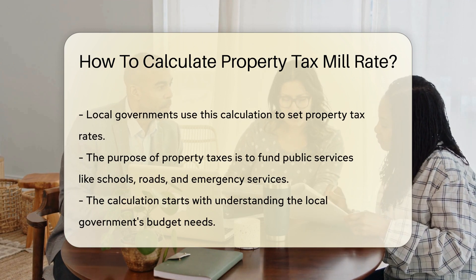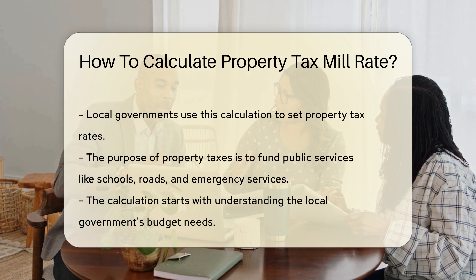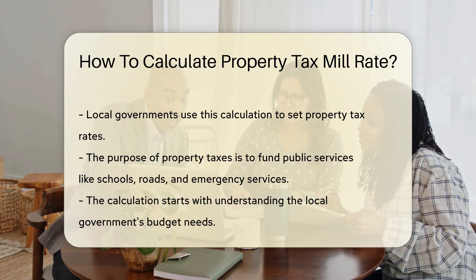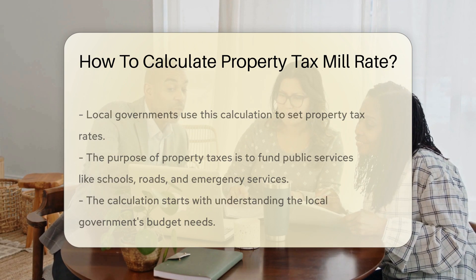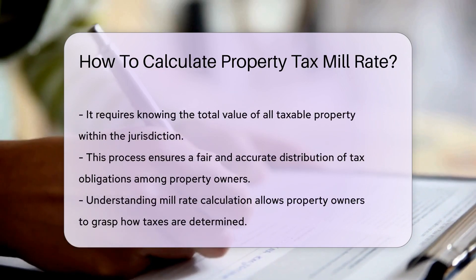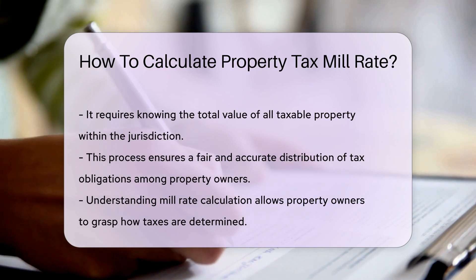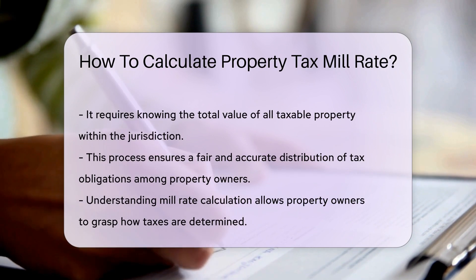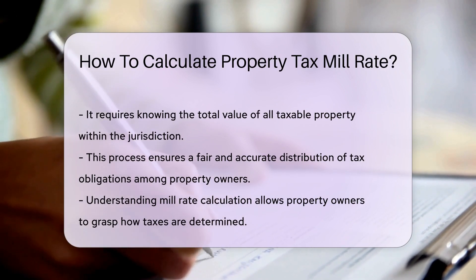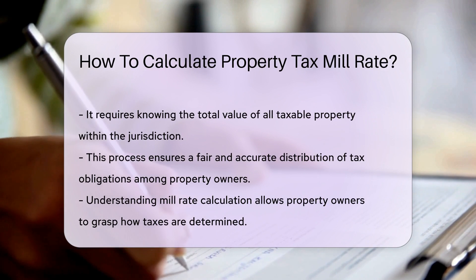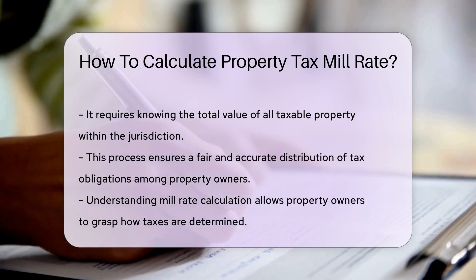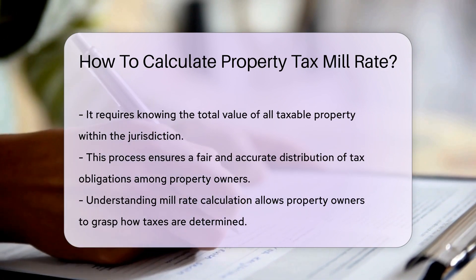Calculating the mill rate involves understanding the local government's budget and the total value of taxable property within the jurisdiction. It is an essential step in determining how much each property owner will contribute to the tax revenue based on the value of their property.